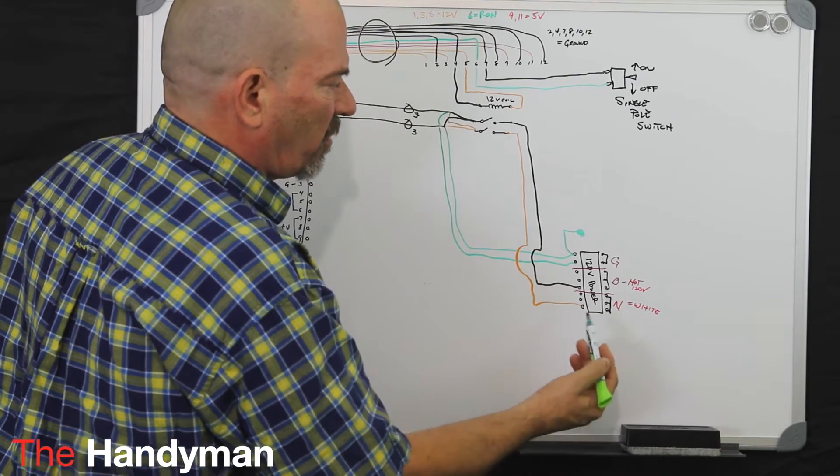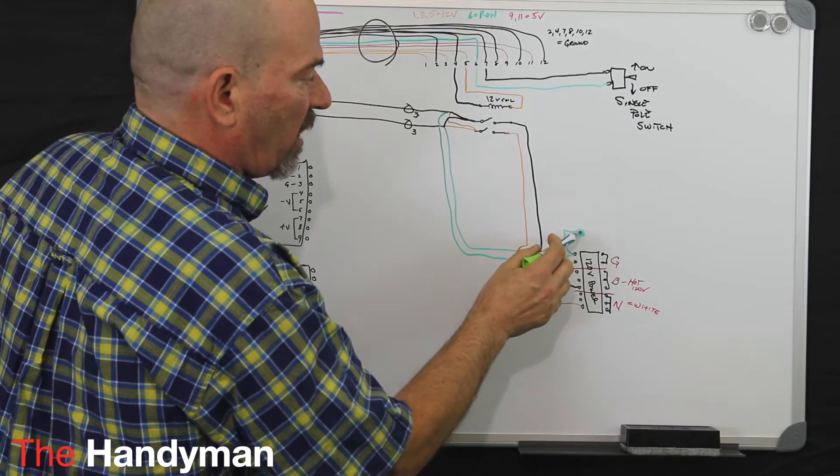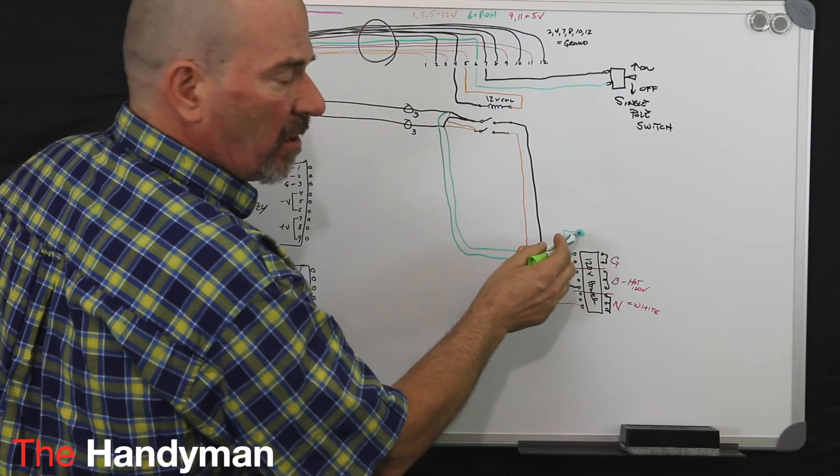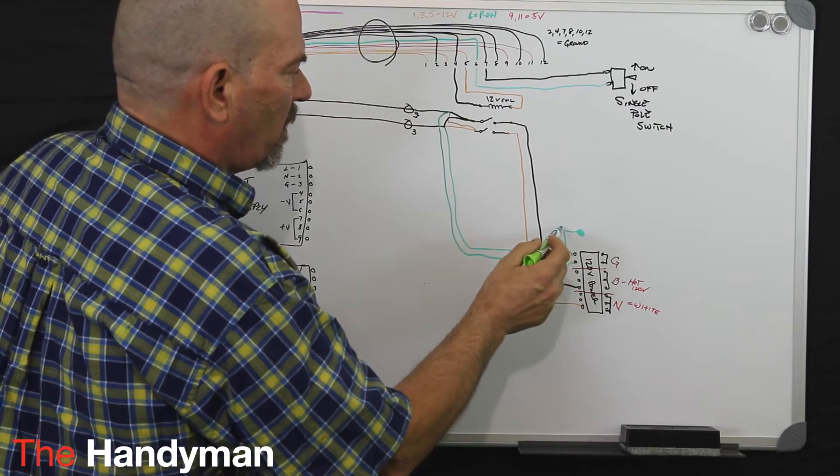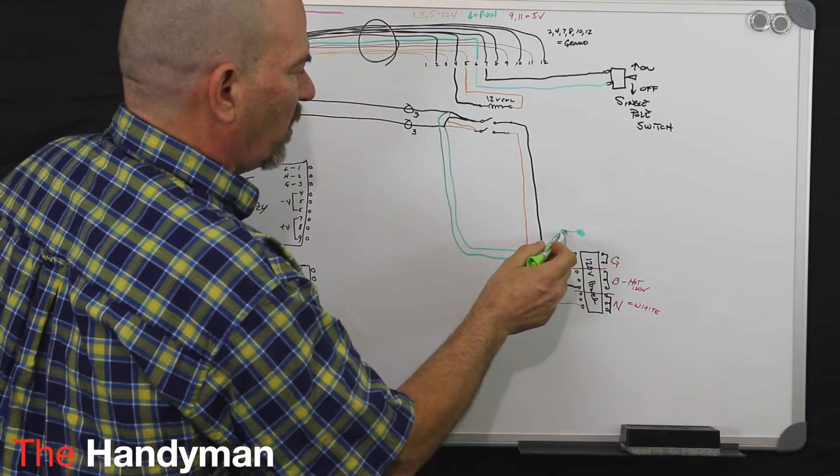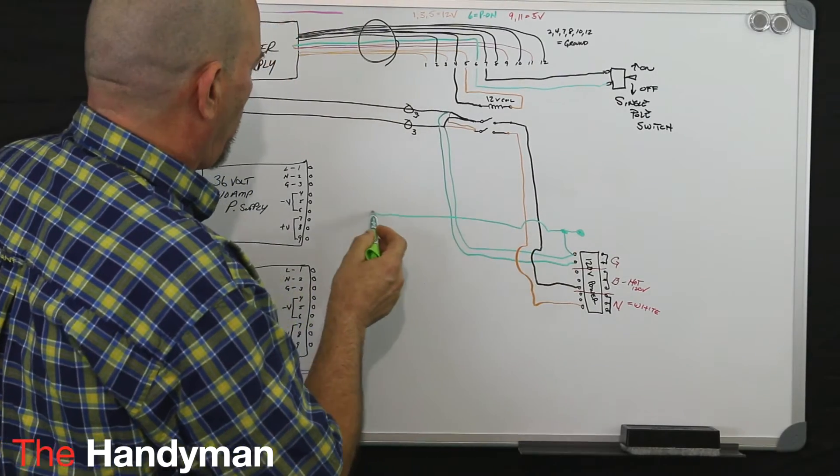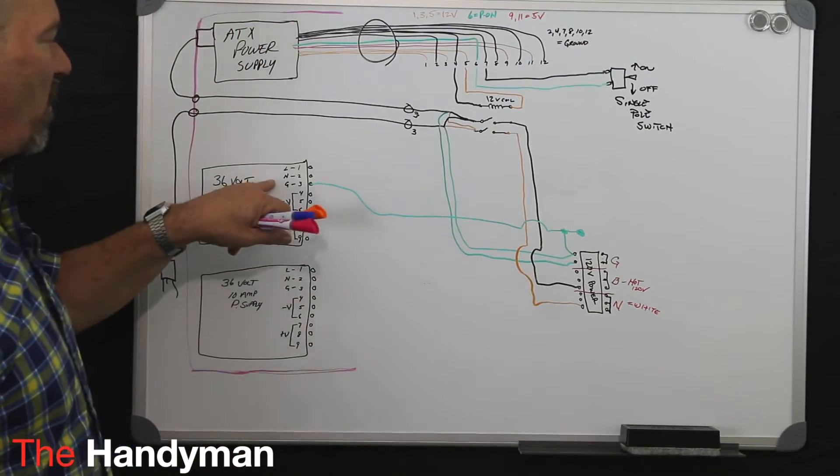So you're going to take your grounds, you come off one of these screws, or you could come off your grounded screw, your bonded screw from your box. Which to make things simple, that's what we'll do. We'll just come off that same screw with another wire and we go to our first power supply.